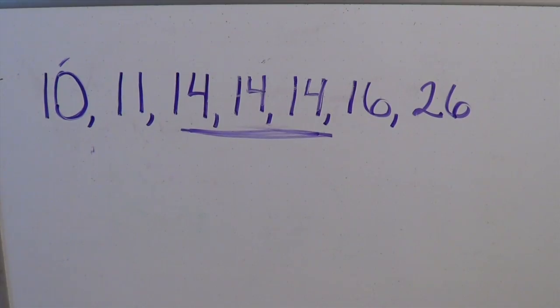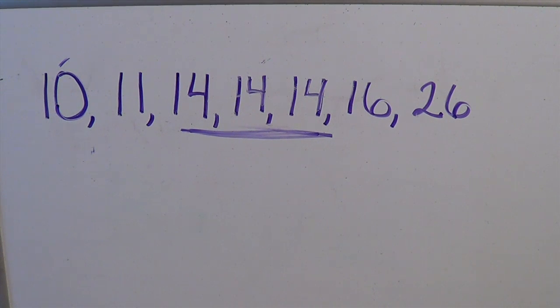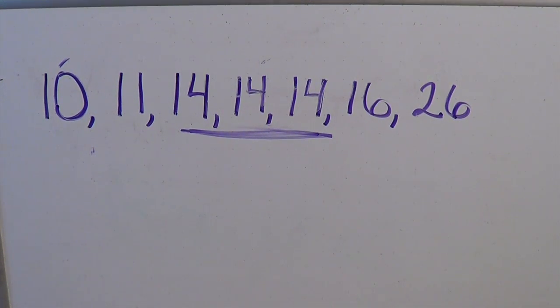Everyone is like me, or at least wants to be like me. Obviously, 14 is the most popular number because it shows up the most. 10, 11, 16, and 26 don't show up as much as 14. However, 14 shows up three times, which is more than any other number. This is why 14 is the most popular and the true average number.